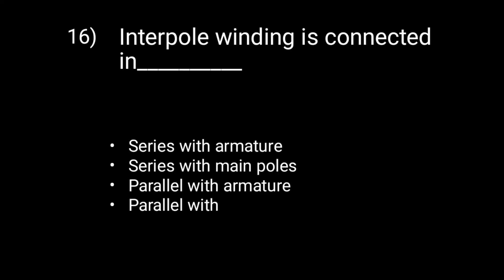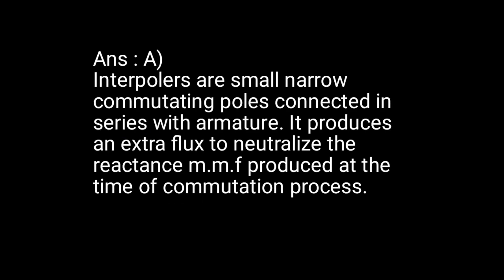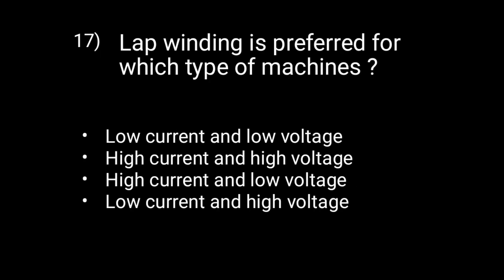Question 16: Interpole winding is connected in series with the armature. Option A is correct. Interpoles are small, narrow commutating poles connected in series with the armature. They produce an extra flux to neutralize the reactance MMF produced during the commutation process.